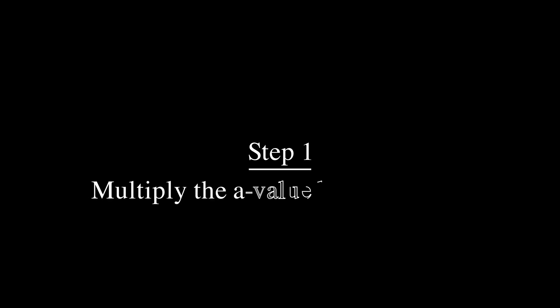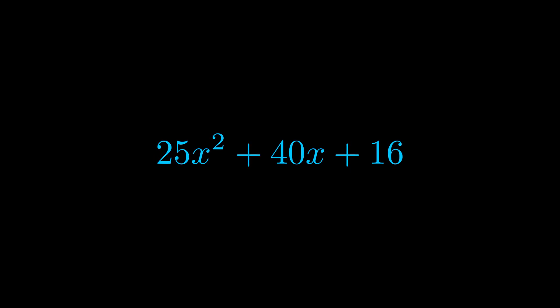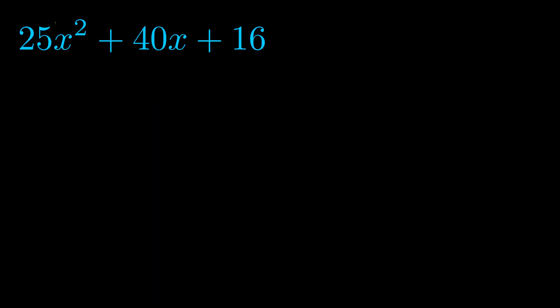Step one when factoring an equation of this form is to multiply the a value by the c value. Here we can see that our a value is the coefficient on the x squared term and our c value is the constant term.